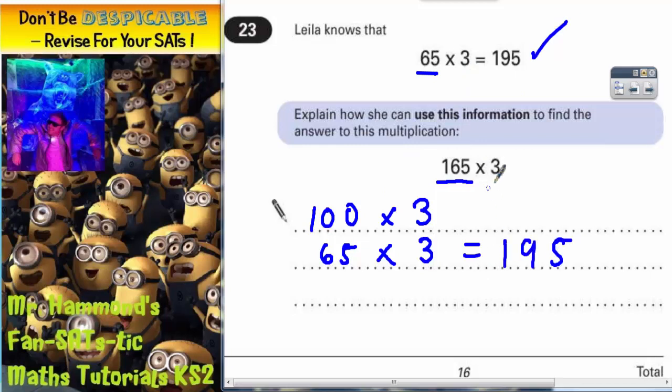So we've already got 3 lots of the 65, so we just need 3 lots of the 100. And 3 lots of 100, nice and easy, is 300.